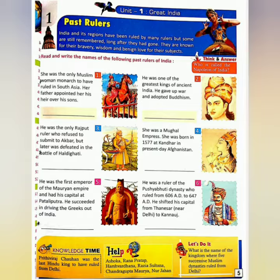I will explain Chapter 1, Past Rulers, from the book Knowledge Square. India is a land where great kings and queens took birth. But some are still remembered long after they had gone, because they are known for their bravery, wisdom, and their love for their land. Let's start the chapter.